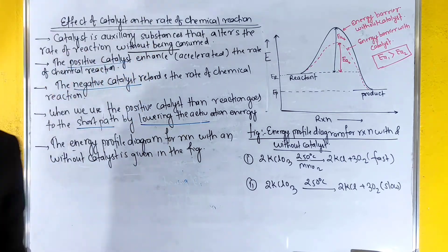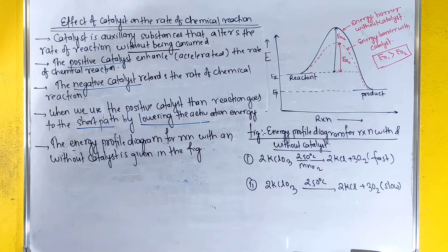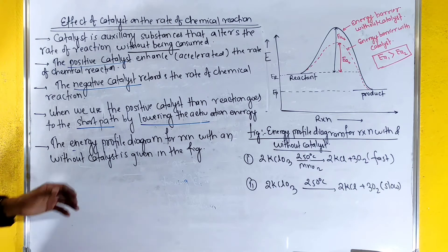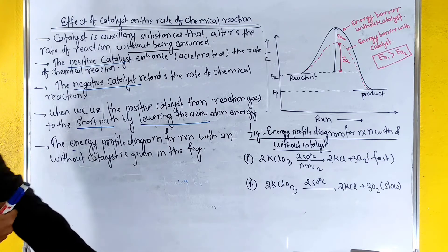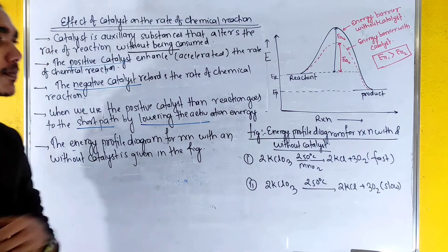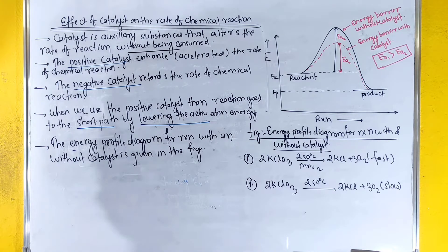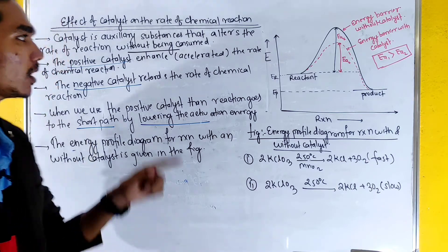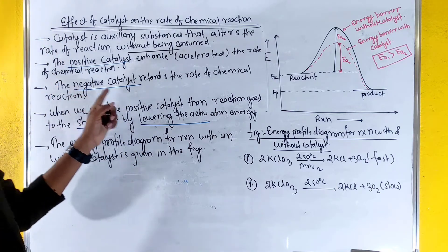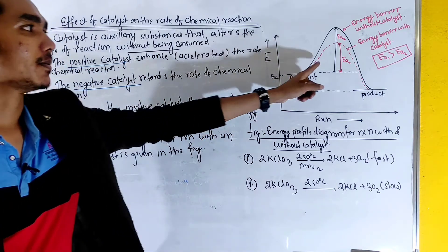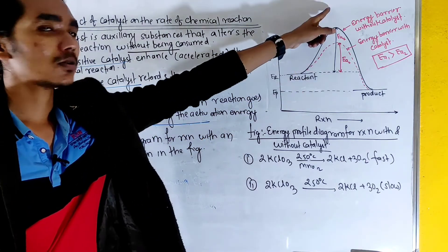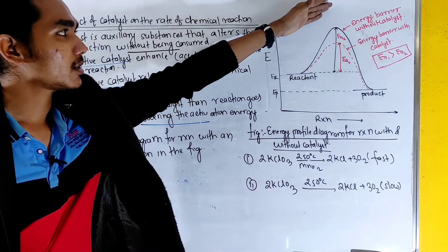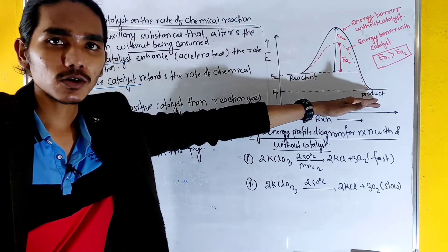The effect of catalysts is that you can use them to increase the rate of reaction. The negative catalysts raise the activation energy barrier, so the product formation is less.